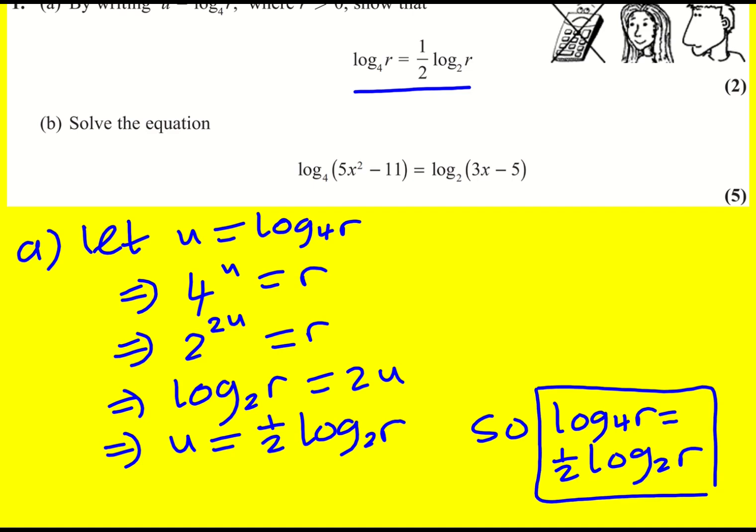An alternative way of doing it actually at this point is to still is just to take log to base 2 of both sides. And then bring u down using a third rule of logs. And then you'd still have to write 4 as 2 squared.